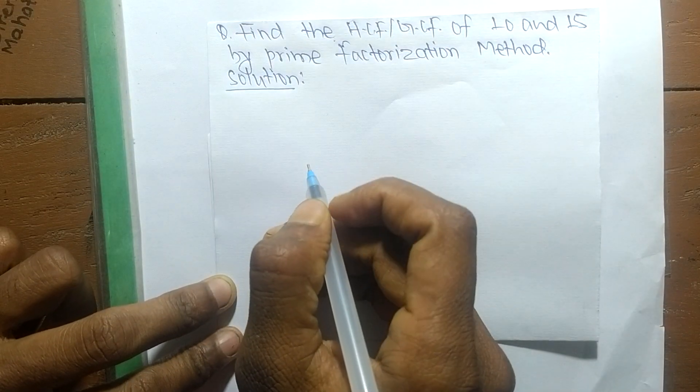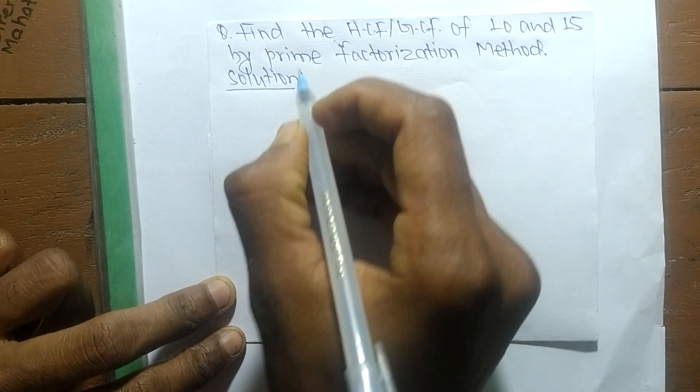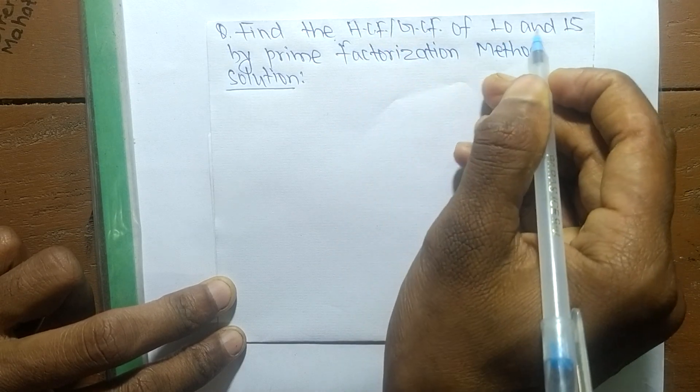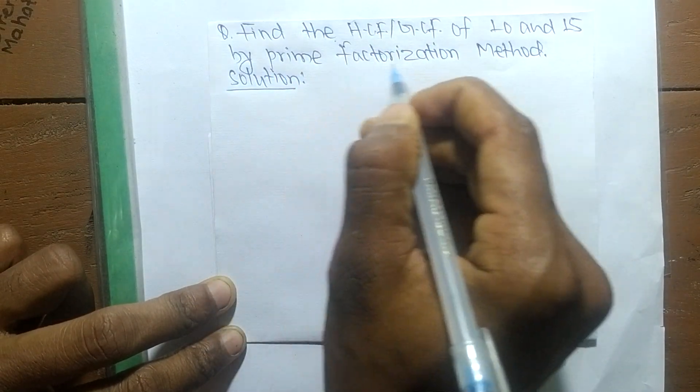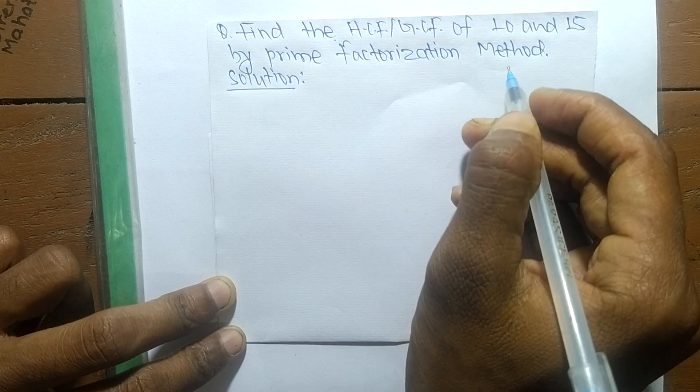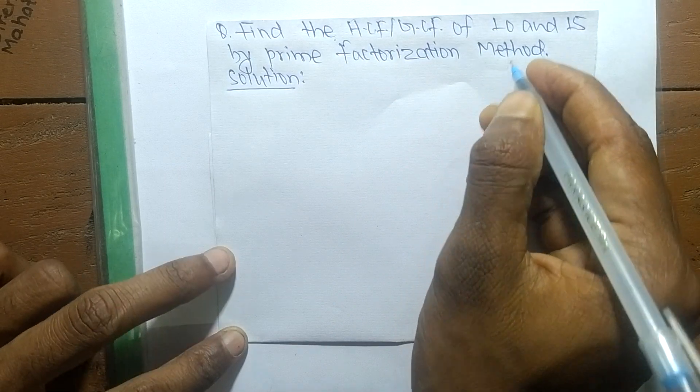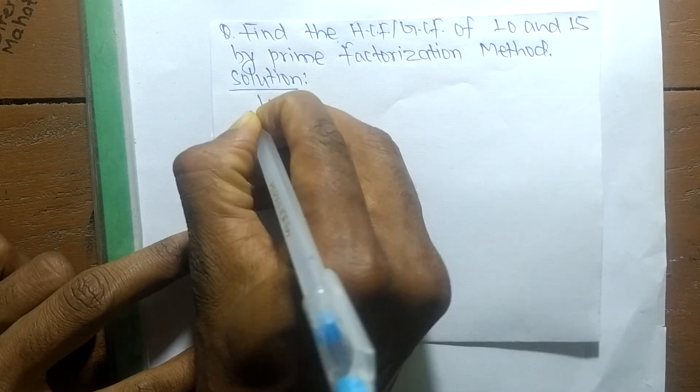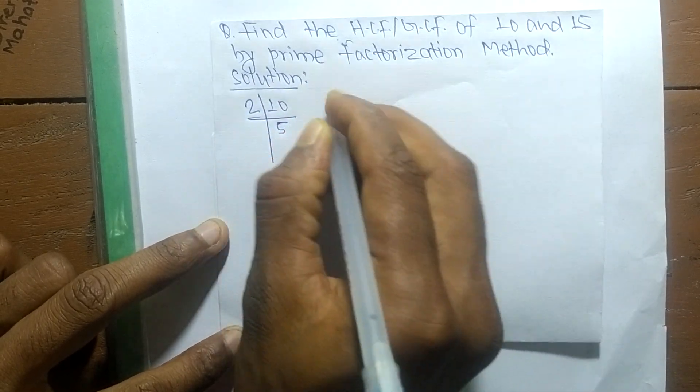Today in this video, we will learn to find the HCF or GCF of 10 and 15 by prime factorization method. First, we find out the prime factors of 10, which is 2 times 5.